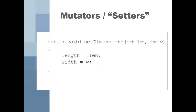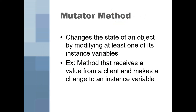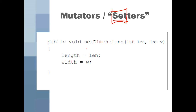The other kinds of methods are mutators, or you might call them setters, because they set information. These change the state — the variables — of an object by modifying at least one of its instance variables. Notice that unlike accessors which had int or double as a return type, mutators use void. This means they're not returning anything, which is very common — mutators are just changers, not returners.